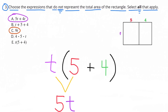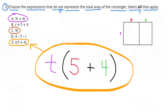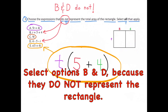T times 5 is the same as 5 times T, and T times 4 is the same as 4 times T. So 5T plus 4T equals 9T, just like option C, meaning option E, T times 5 plus 4, also works. The options that do not work are B and D. Option B represents T plus 5 plus 4, which is T plus 9. Option D represents 4 times 5 times T, which equals 20T.